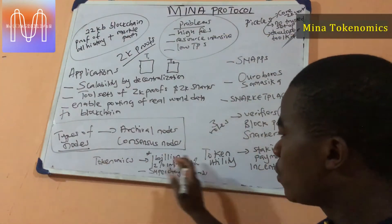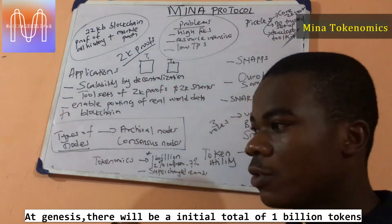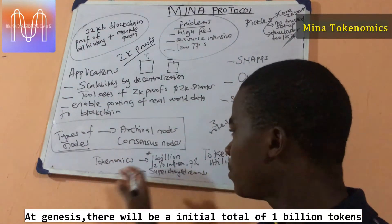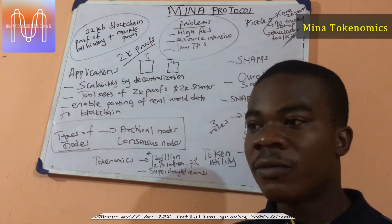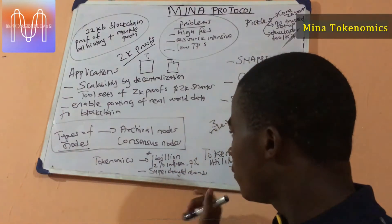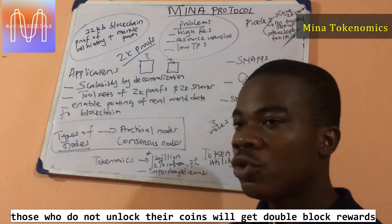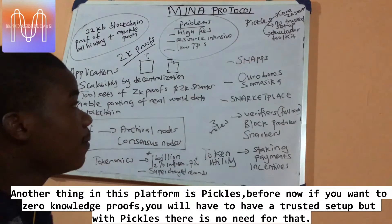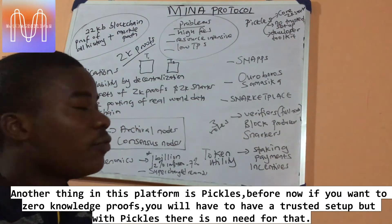Let's talk about the token economics. At the initial Genesis — which is days or weeks away — 1 billion tokens will be minted. There will be 12% inflation initially, and after 48 months, which is four years, it will drop to 7% inflation. There are also supercharged rewards: if you do not unlock your coins, you will get double the block rewards.